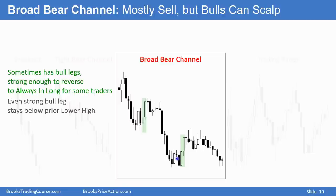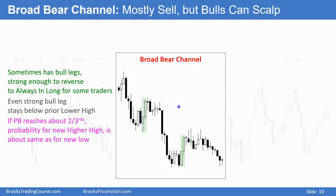For a broad bear channel, as long as a pullback stays below maybe two-thirds of the height of the prior sell-off, the probability is the market's going lower. If you get a pullback that goes up about two-thirds of the height of the prior sell-off, it becomes 50-50 whether it's going to go lower or higher. In general, because it's a broad channel, the bears are taking profits at new lows and selling rallies. The bulls know that, so they're doing the opposite — buying new lows and scaling in lower, confident that pullbacks will go above breakout points. Most traders should only be selling rallies.